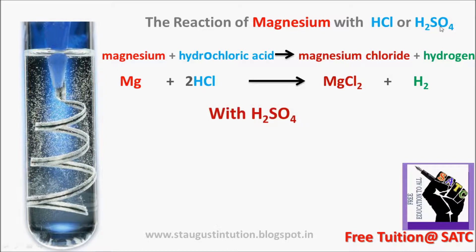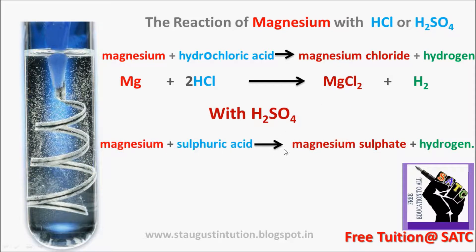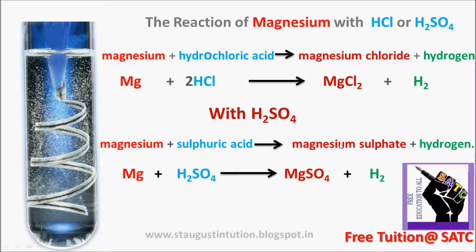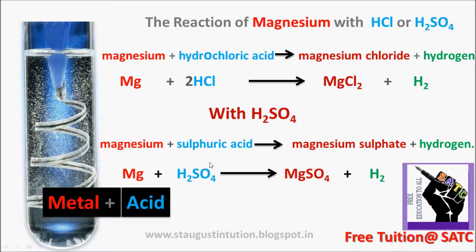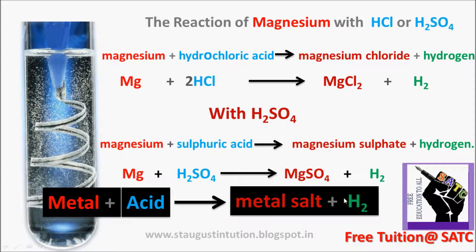With H₂SO₄, sulfuric acid, the same type of reaction occurs. Mg + H₂SO₄ → MgSO₄ + H₂. MgSO₄ is magnesium sulfate. Any acid reacts with metal to give a salt plus hydrogen: chloride gives magnesium chloride, sulfuric acid gives sulfate — magnesium sulfate.